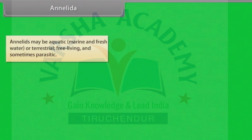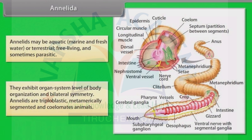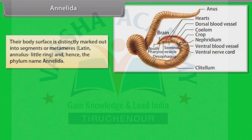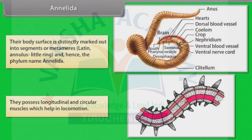Annelids may be aquatic, that is marine and freshwater, or terrestrial, free-living and sometimes parasitic. They exhibit organ system level of body organization and bilateral symmetry. Annelids are triploblastic, metamerically segmented and coelomate animals. Their body surface is distinctly marked out into segments or metameres, which is a Latin word meaning annulus, meaning little ring, and hence the phylum name Annelida.